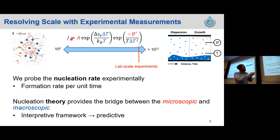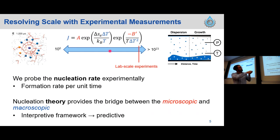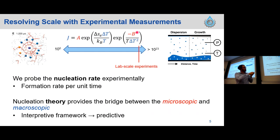The classical nucleation theory equation for the nucleation rate — our J parameter — has two different scales within it. The subcooling and the temperature are macroscopic properties, while the A and B-prime parameters are actually microscopic properties that describe things about the nucleation process itself.